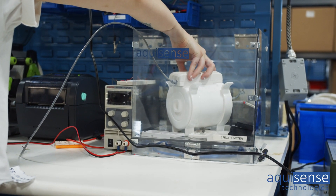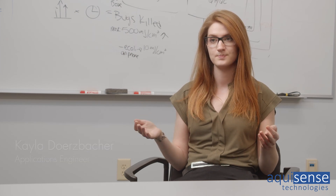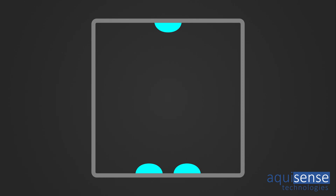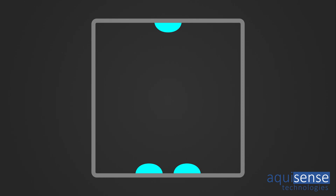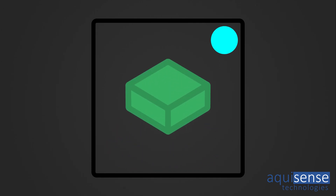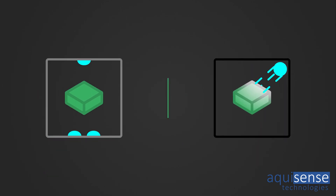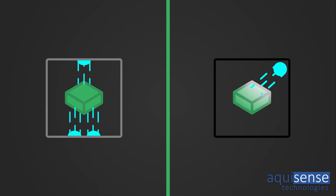UV is a line-of-sight disinfection, meaning that if you can't see it or if it's shadowed, it's not getting treated. That's why we have lights on the top and the bottom of the Pearl Surface. A lot of systems out there will have one bulb placed kind of randomly inside, and that's really not going to provide the treatment you need to the full object.